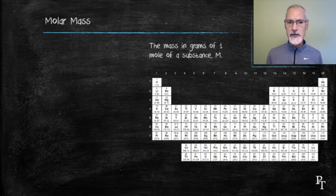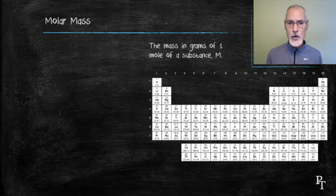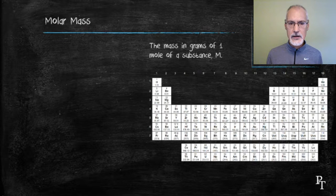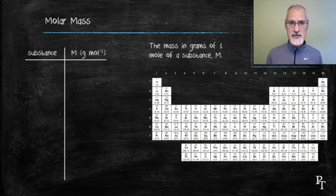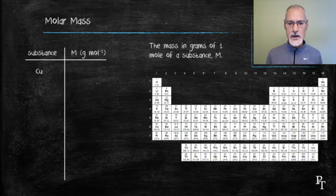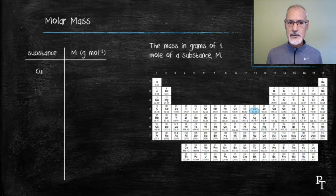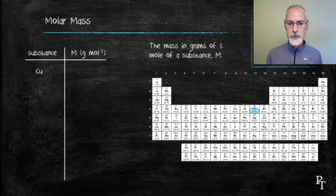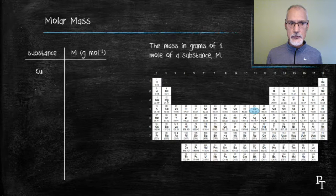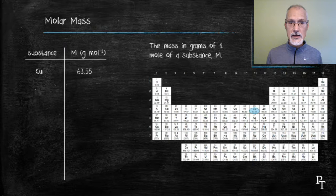I want to also introduce a concept called the molar mass, which is the mass in grams of 1 mole of a substance. So let's consider some of the substances I've mentioned earlier. If I was to have 1 mole of copper, how much would that weigh? To do that, I consult the periodic table and the relative atomic mass that lies beneath copper. If I convert that into grams, that gives me the mass of 6.02 times 10 to the 23rd atoms of copper, 63.55 grams.